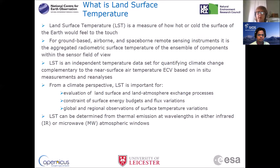It's the aggregated radiometric surface temperature of the ensemble of components within the sensor field of view — a few metres for a ground radiometer, and on the order of 100 metres to one kilometre to five kilometres for spaceborne sensors, depending on the satellite. And it's an entirely independent temperature data set from the air temperature essential climate variable.